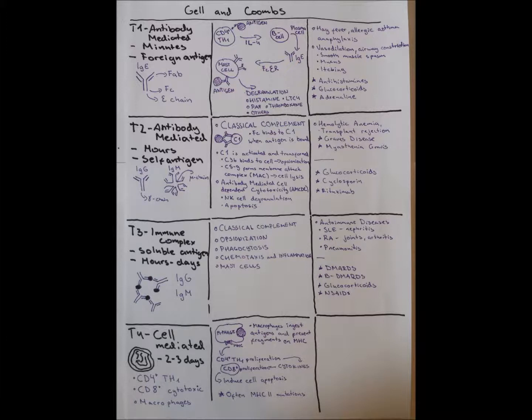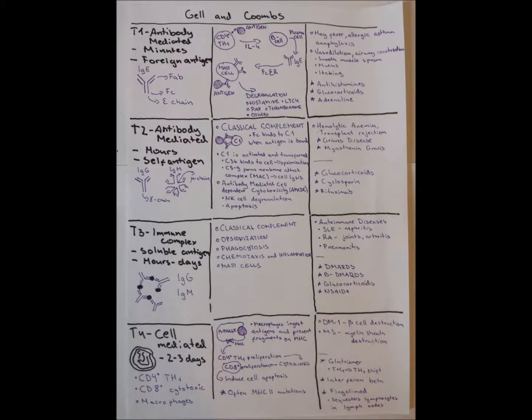Biologicals are not used that often, only in special cases. Glucocorticoids and non-steroidal anti-inflammatory drugs are often used. For type 4, memorable examples are diabetes mellitus type 1, where beta cells are destroyed in the pancreas by cytotoxic T-cells, and multiple sclerosis, where myelin sheath is destroyed in the central nervous system. We use glatiramer, which shifts cell concentrations from T-helper 1 to T-helper 2 to regulate inflammation. Interferon beta and fingolimod are used. Fingolimod sequesters lymphocytes in lymph nodes and prevents them entering the central nervous system.